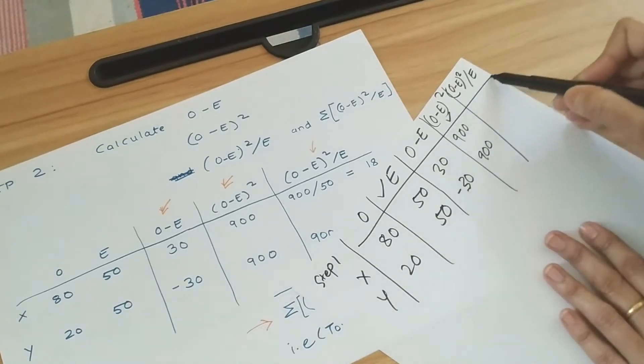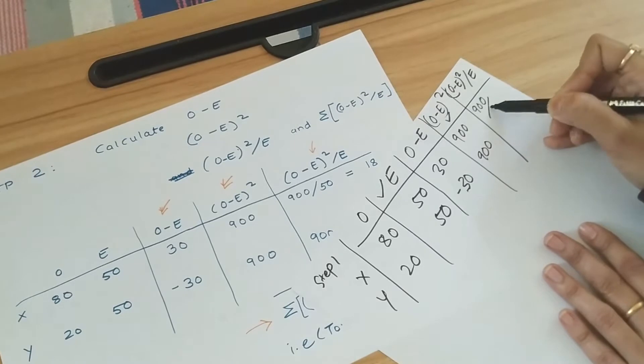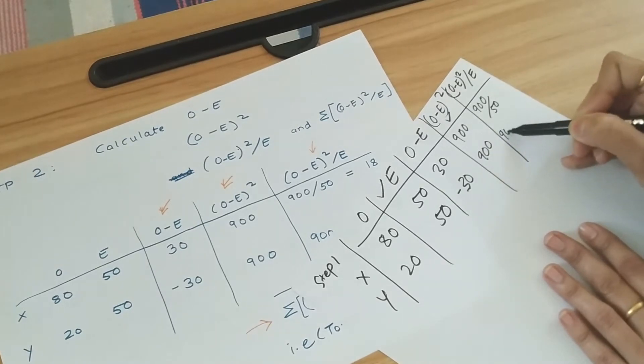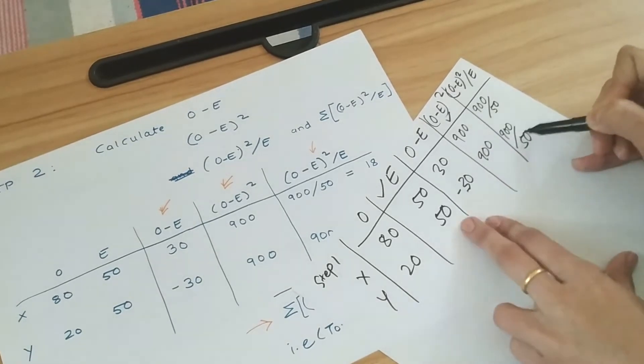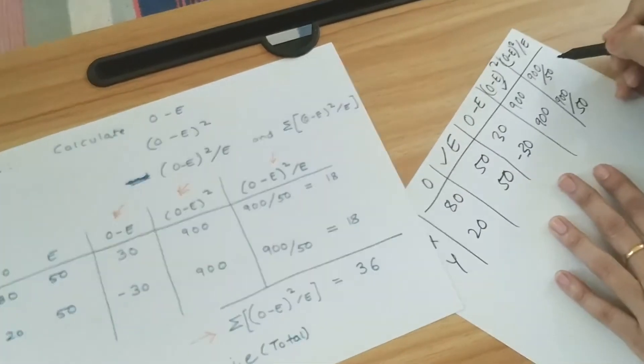So each of the rows will have 900 divided by 50, and here 900 divided by 50 again, that is the E value, which comes out to be 18.